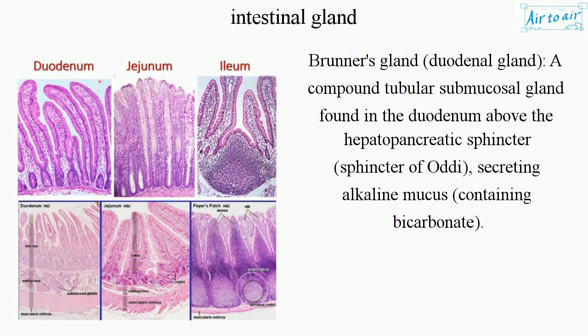Brunner's gland, or duodenal gland: a compound tubular submucosal gland found in the duodenum above the hepatopancreatic sphincter (sphincter of Oddi), secreting alkaline mucus containing bicarbonate.